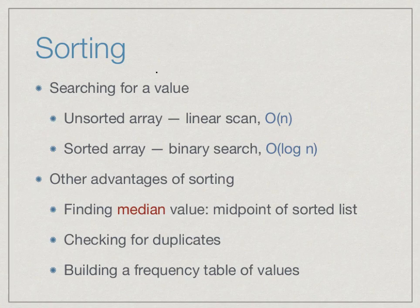Sorting also gives us as a byproduct some other useful information. For instance, the median value in a set is a value such that half the values are bigger and half are smaller — once we have sorted a sequence, the midpoint automatically gives us the median. We can also build frequency tables or check for duplicates, since all identical values come together as a block.